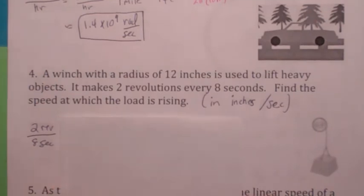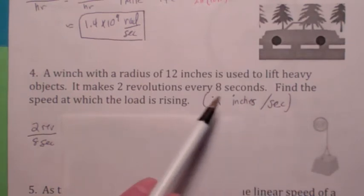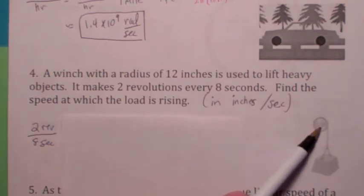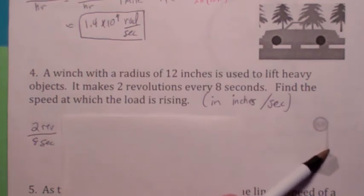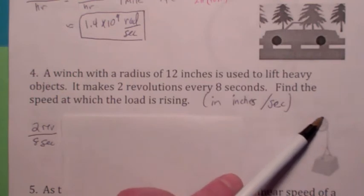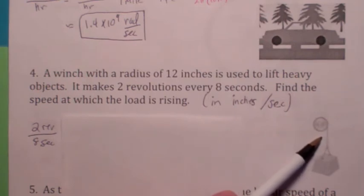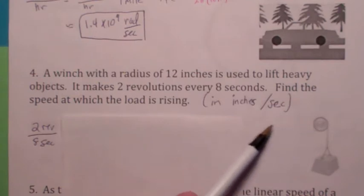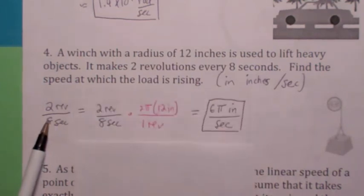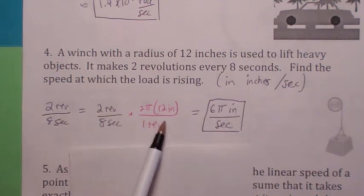Let's do another one. We have a winch that rotates 2 revolutions every 8 seconds — that's the angular speed. It's a 12-inch radius winch, and the question is how fast is this object being pulled up in inches per second. The key observation is that the linear speed of the outer edge of the winch equals the speed at which the object is being pulled up, because it's not slipping. So all we have to do is convert the angular speed to linear speed: one revolution equals the circumference, 2 pi r. The units cancel and you have 6 pi inches per second.